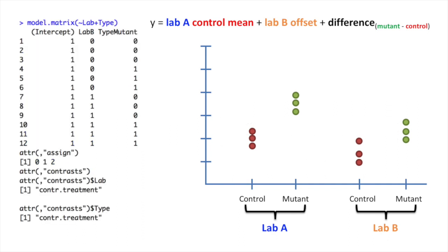Then, if we wanted to, we could call model.matrix to see what the design matrix looked like. To do this, we enter the tilde, which represents the Y value, or gene expression data, and say that it is modeled by the lab and the type. We don't have to specify the control mean because that is done by default.